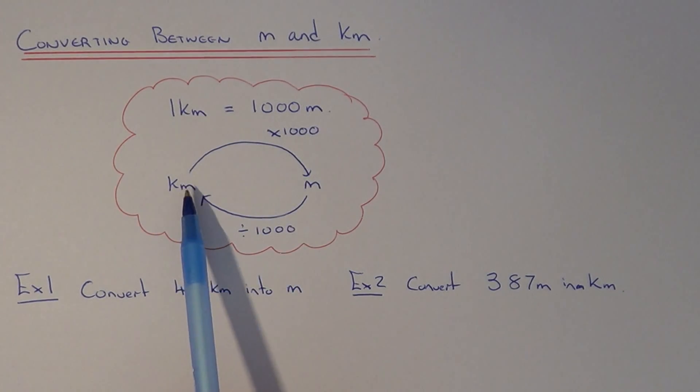So if you're converting kilometers into meters, you need to multiply the number by a thousand. And if you're doing it back the other way, converting meters back to kilometers, you need to divide the number by a thousand.